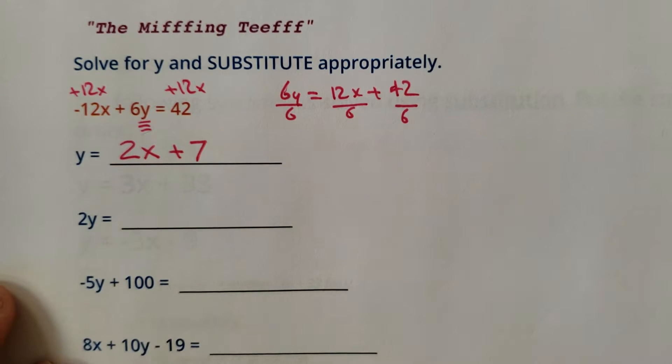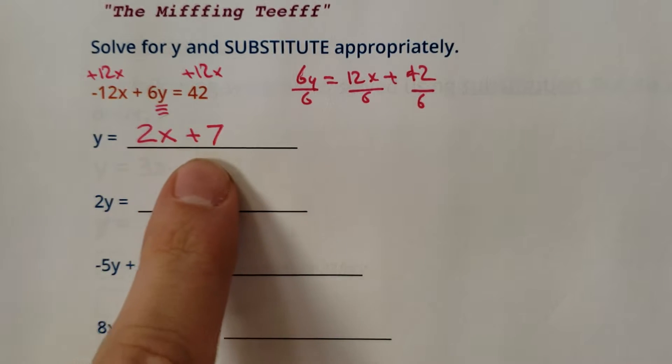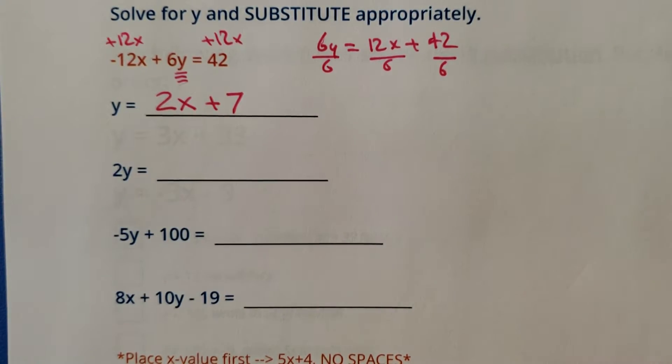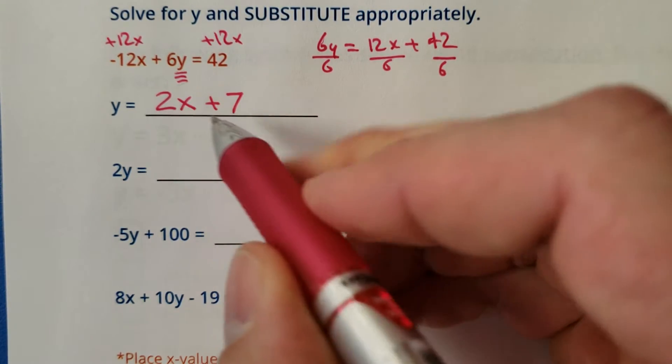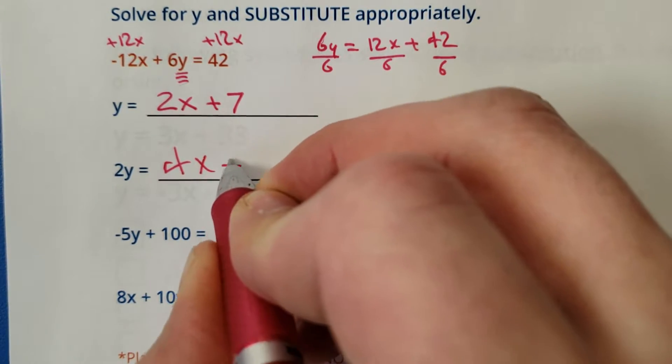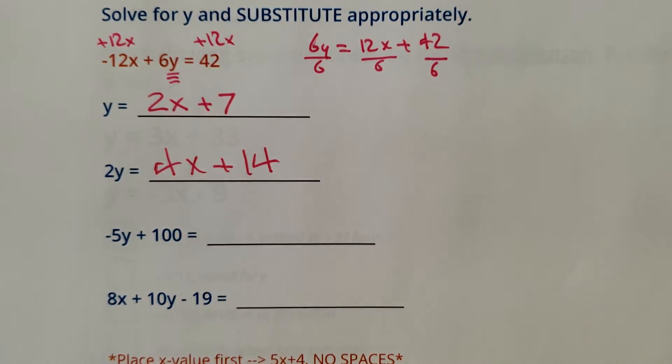So now I'm really going to test your mental math skills here. So if y equals 2x plus 7, what in the world does 2y equal? A 2y would just be double that. So 2y would be 4x plus 14.